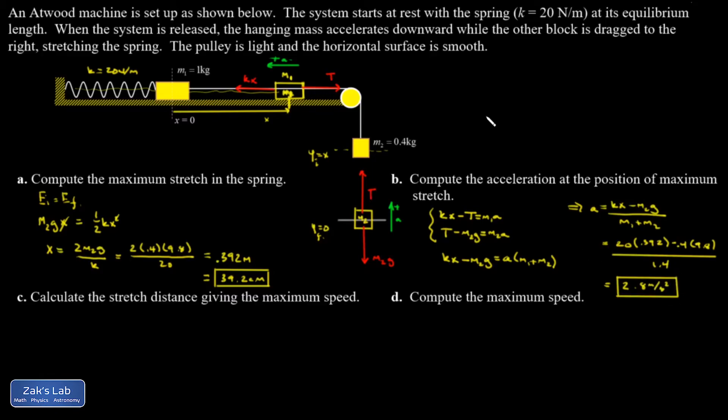So in part c, we're asked to calculate the stretch distance giving the maximum speed. So when we release this system from its initial configuration, the masses sped up for a while, and then they started to slow down until they came to a stop at the maximum stretch position. So that transition between speeding up and slowing down, that's going to give you the maximum speed, and the acceleration must be 0 at that point. Just to justify this graphically real quick, here's just a little doodle of a velocity function where it's increasing and then decreasing back down to 0. And I can see that that point of maximum speed happens at a local maximum of the velocity function where the slope is 0, so the acceleration must vanish.